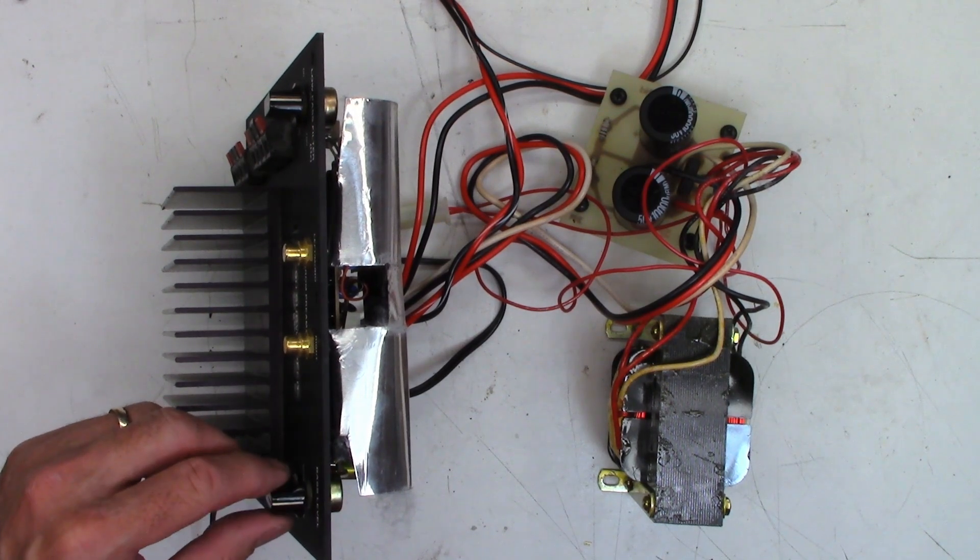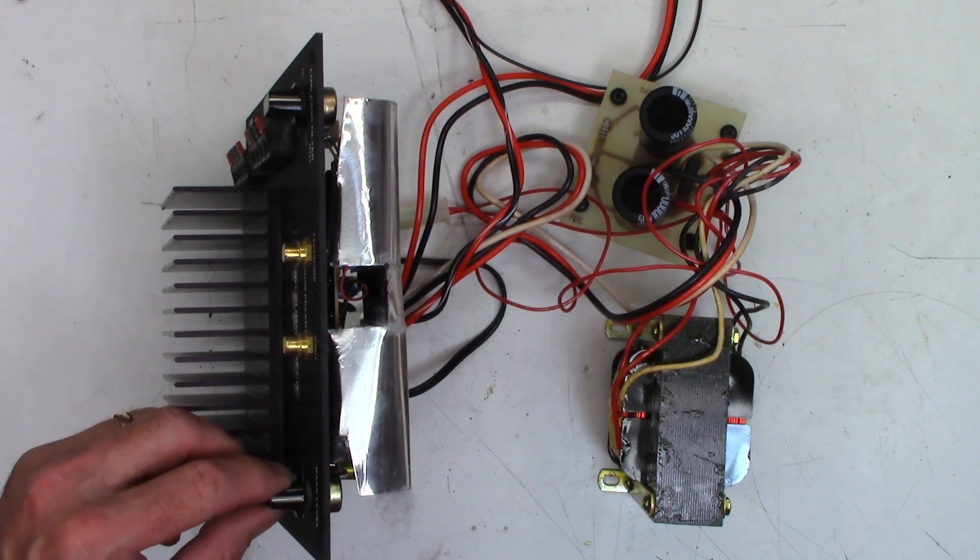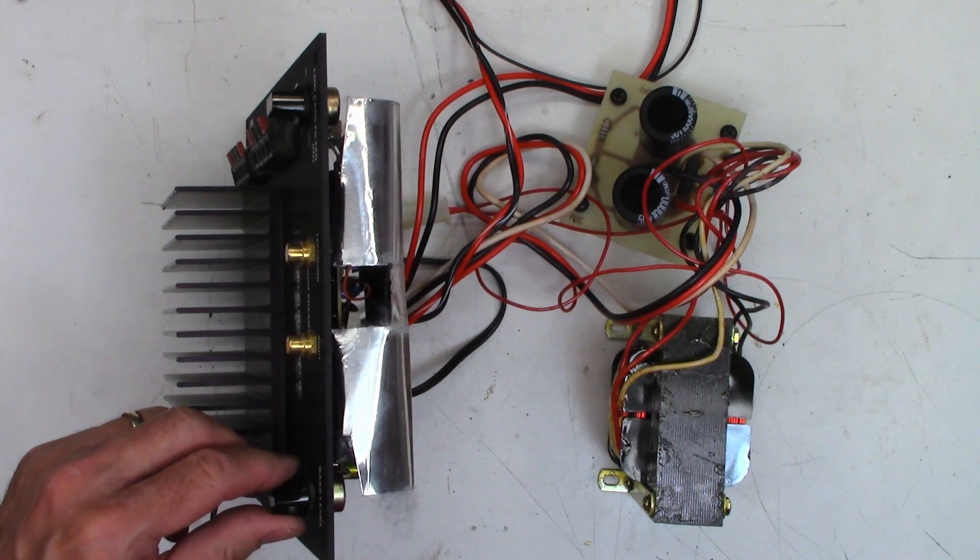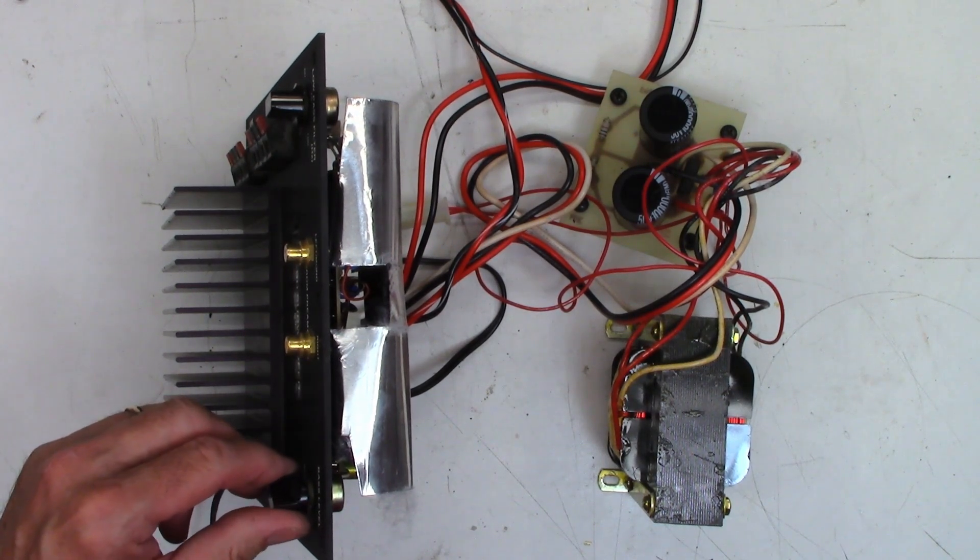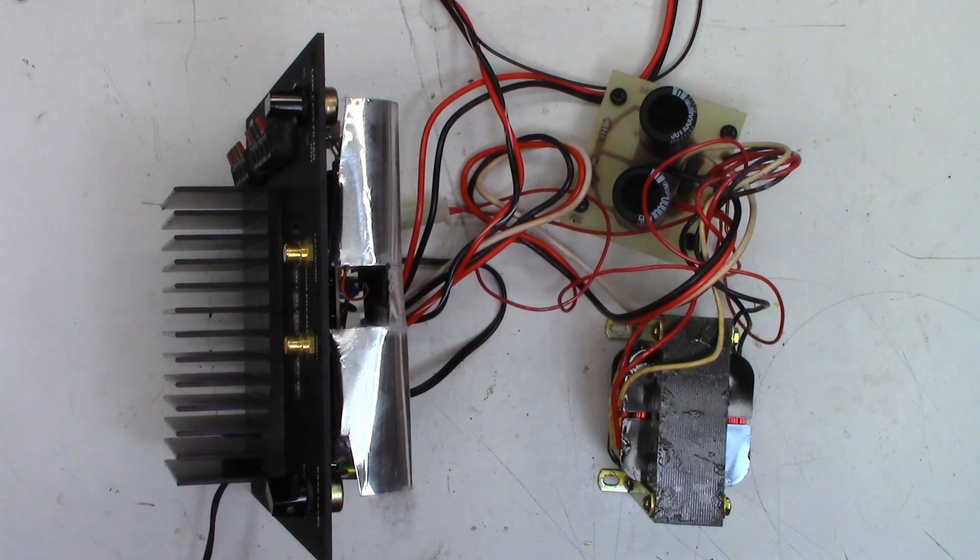The level pot is definitely in need of some deoxit. But I don't think that's it, because it's turned all the way down right now. And I'm not even touching it, and it's going crazy.